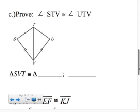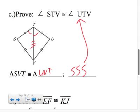We want to prove that angle STV is congruent to UTV, so these two angles here are congruent. First, prove your triangles are congruent: SVT is congruent to UVT, and we know that because of SSS. We have the reflexive property here, and then once we identify that, now we can say the angles are congruent, CPCF.